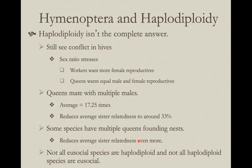Haplodiploidy may predispose certain Hymenoptera to eusociality, but it's not a complete answer, and it's not linked to perfect cooperation within the hive. We still see conflict, often associated with sex ratio stress. Workers are related to future queens — their sisters — by 75%, which is where they get the most bang for their buck. But queens are equally related to their sons and daughters at 50%, so they want an equal representation of males and females produced.